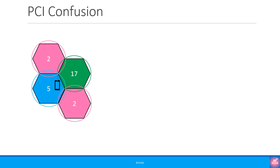Another issue is known as PCI confusion. Here, the UE is in a cell with PCI 5, which is the blue one. It reports information about 2 cells with PCI 2, which are the pink ones. The current cell, the blue one, doesn't know where to hand over the UE — the top pink one or the bottom pink one. PCI confusion can lead to a higher number of handover failures and call drops.